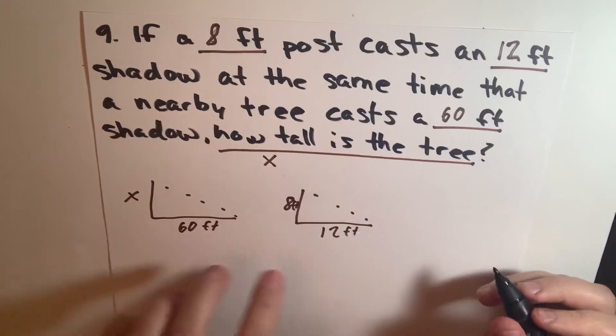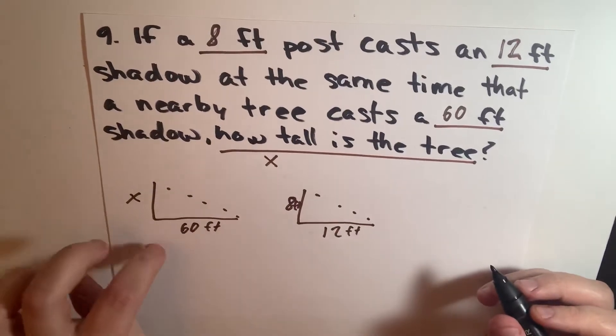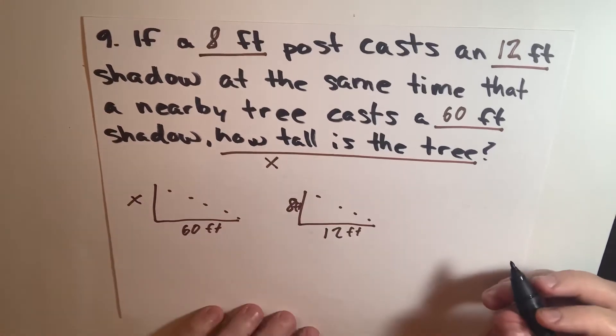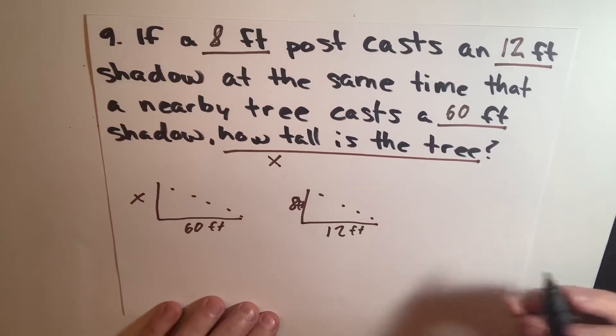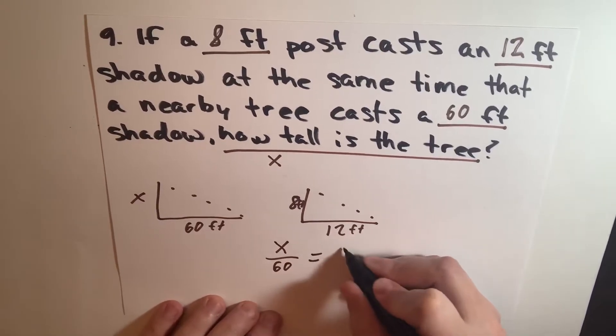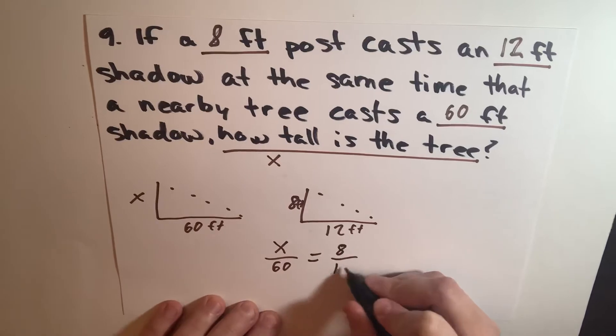These two triangles are very similar. They're the same shape and size. So what you can do is actually set this up as a fraction. It's going to be x over 60 equals 8 over 12.